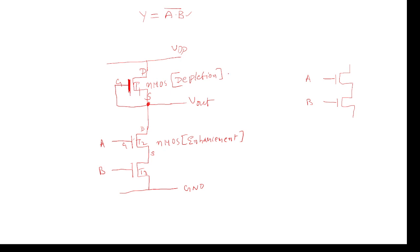Depletion-mode means there is already a channel between source and drain formed during fabrication. Since the source and gate are interconnected, it is always in the ON condition because there is always a sufficient VGS and sufficient VDS greater than the threshold voltage. Therefore, this transistor is always ON.